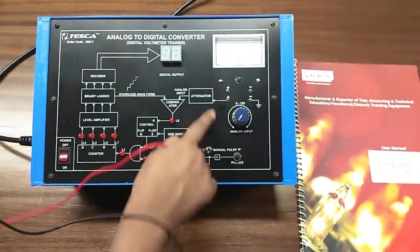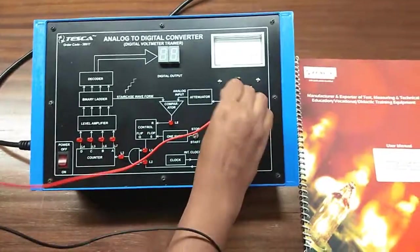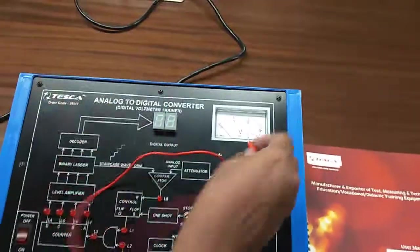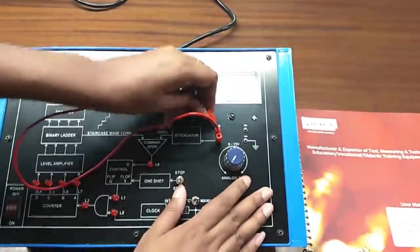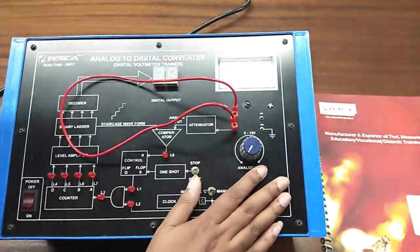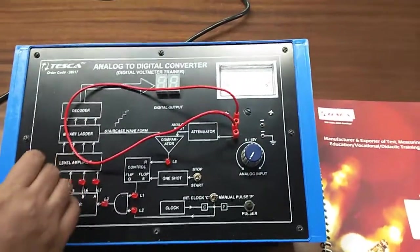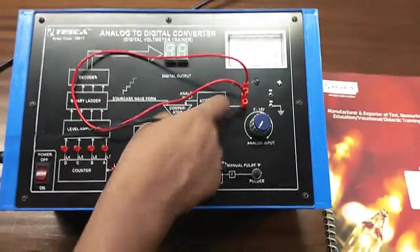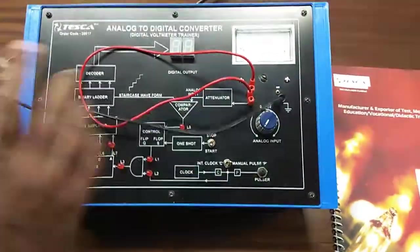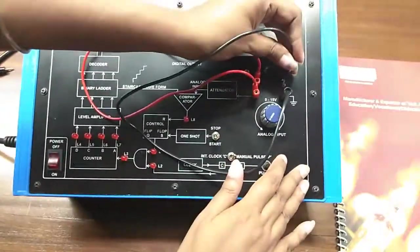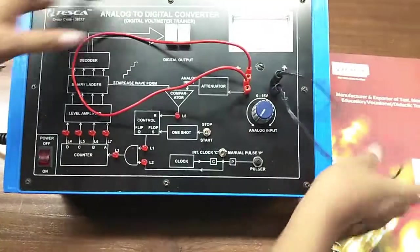First, we will connect this analog input to the voltmeter so we can observe the voltage and set it as we want, plus to plus and minus to minus. Now turn on the gate.